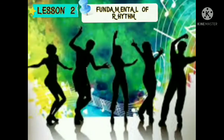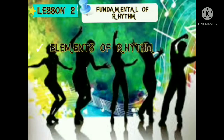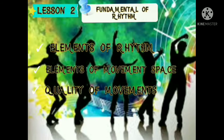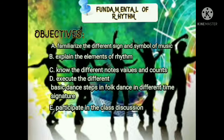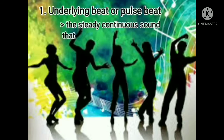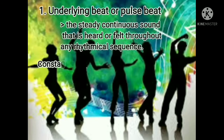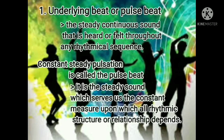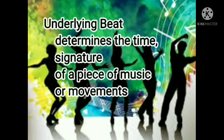Lesson 2: Fundamentals of Rhythm. To better facilitate the learning of dances and other rhythmic activities, we should first understand the elements of rhythm, elements of movement space, and the qualities of movements. Objectives: at the end of the lesson, students are expected to familiarize themselves with different signs and symbols of music, explain the elements of rhythm, know the different note values and counts, execute basic dance steps in folk dance in different time signatures, and participate in class discussion. The underlying beat or pulse beat is the steady, continuous sound heard or felt throughout any rhythmical sequence — the constant steady pulsation that serves as the measure upon which all rhythmic structure depends. The underlying beat determines the time signature of a piece of music or movement.